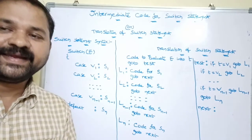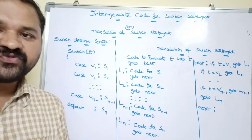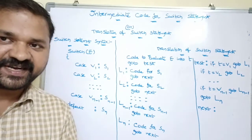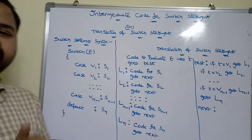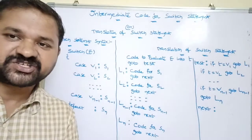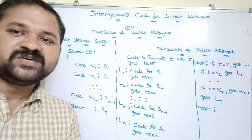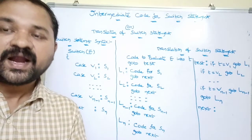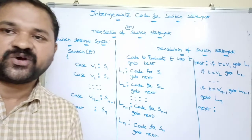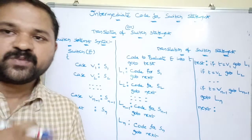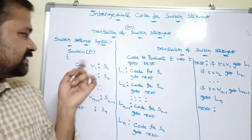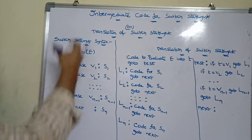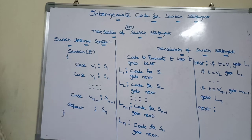Let's look at intermediate code for a switch statement, also called translation of the switch statement. Switch is mainly useful when we have a number of choices and we want to select one choice among a list of choices.